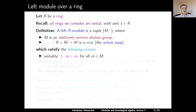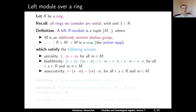Then we have bi-additivity: if we act by r + s on the sum of m and n, the outcome should be the sum of r·m, r·n, s·m, and s·n, for all r, s in the ring and m, n in the module. And finally, associativity: for all r, s in the ring and m in the module, applying r to the outcome of applying s to m should give the same element as applying the product rs to m.